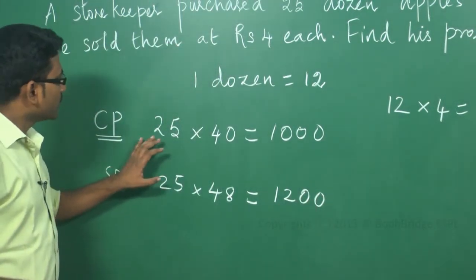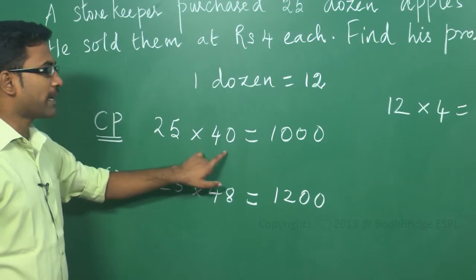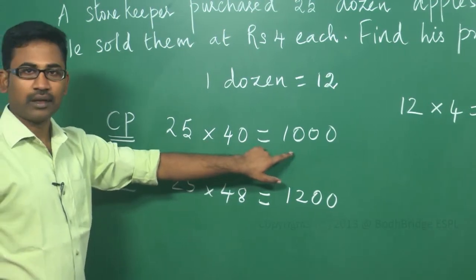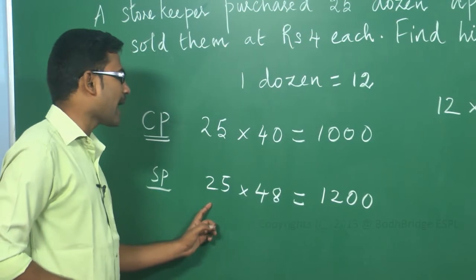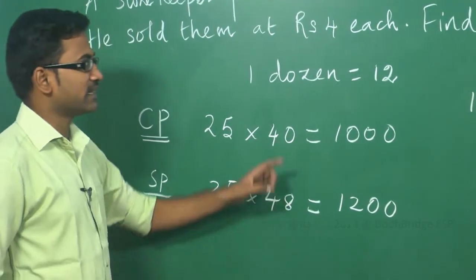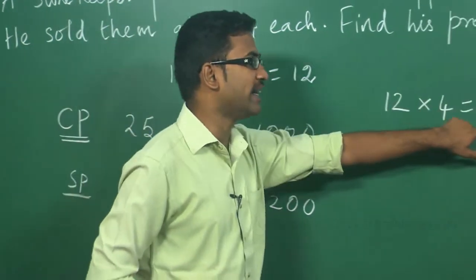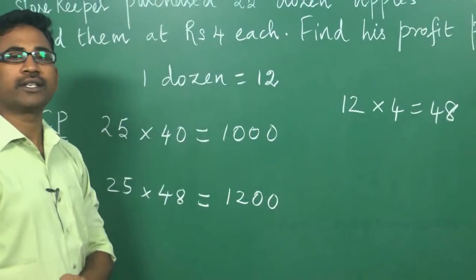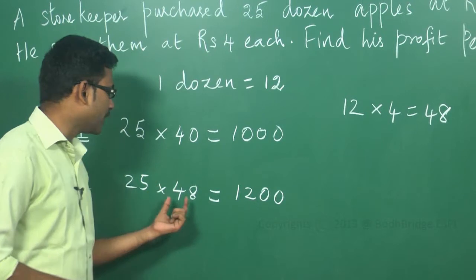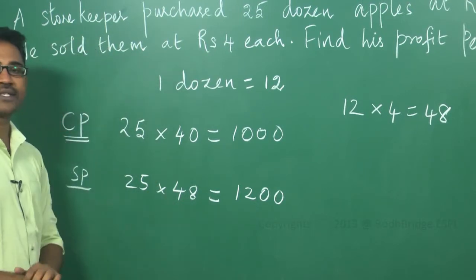Listen here. 25 dozens they purchased for Rs. 40, so it is Rs. 1000. Now, he is selling 25 dozens for Rs. 48 per dozen, that is Rs. 4 each. That means, 12 into 4 equals Rs. 48 for 1 dozen. So, 25 dozen into 48 equals Rs. 1,200.